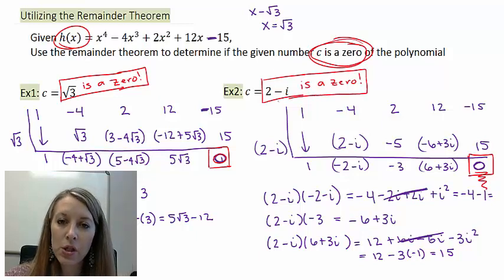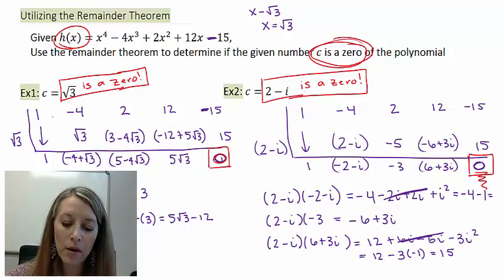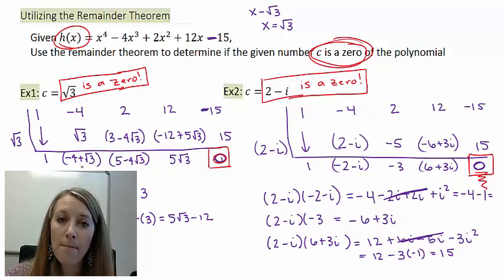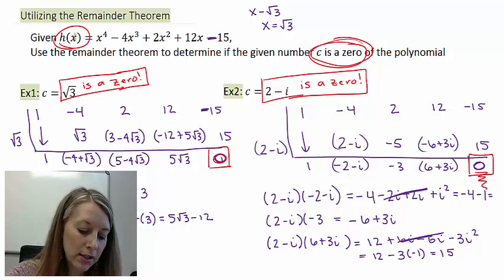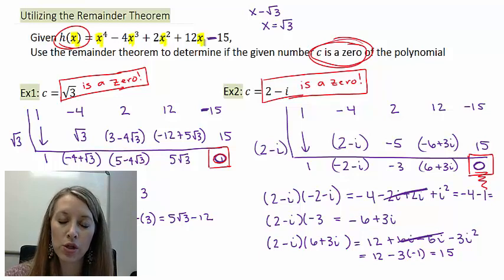So again, my purpose of these two examples were to show you that zeros of the polynomial can take any form: whole numbers, fractions, decimals, radicals, or imaginary numbers. And it might be easier to do the remainder theorem in synthetic division when you're doing more of the odd type of format, such as radicals in example 1 or imaginaries, which is in example 2. So this format might be easier than just substituting these numbers in for all of my x's that we saw in the original equation.